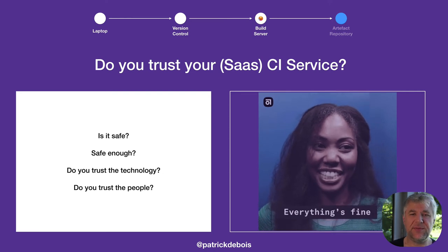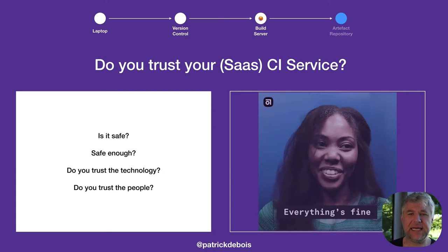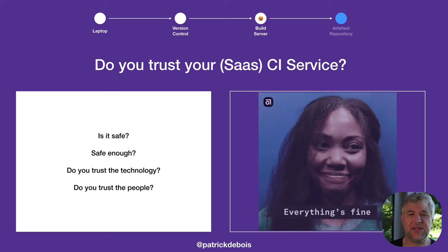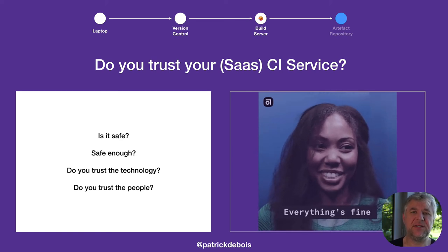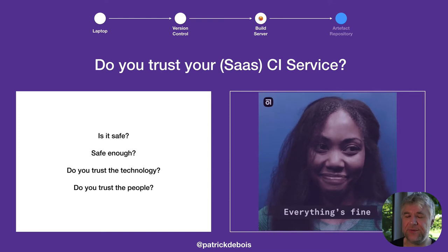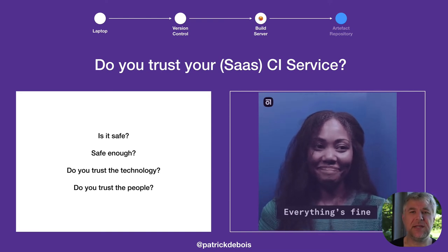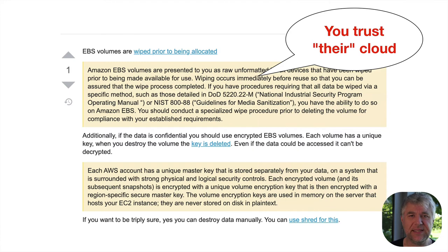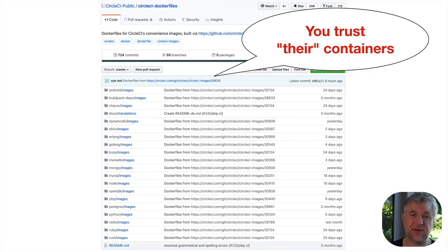Imagine we've now landed our code securely in version control. For many of us as solo developers or small teams, we're pushing to a SaaS CI service. We're not running our own build servers as much anymore in the cloud. But what you're doing is trusting their cloud — whether that's Amazon scrubbing the disks when they give you a new disk, or running inside their containers — all things you're trusting while running your tests or building packages on the build service.